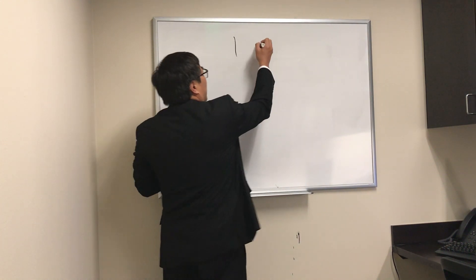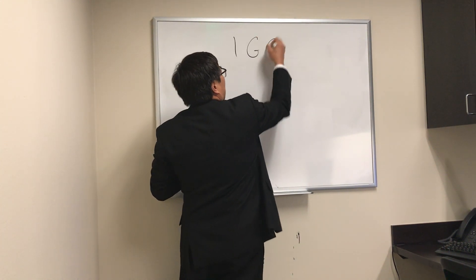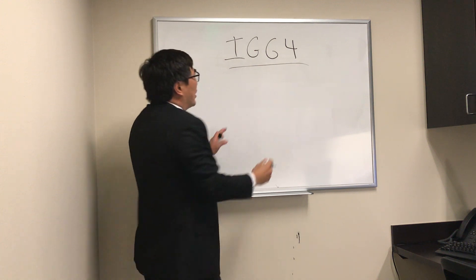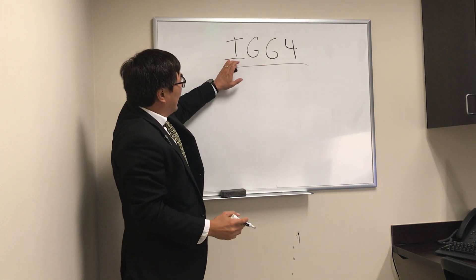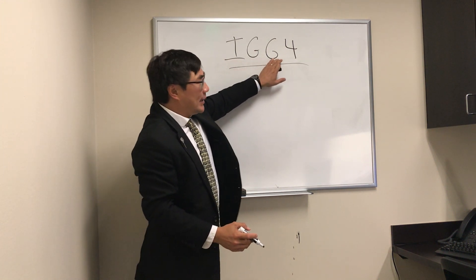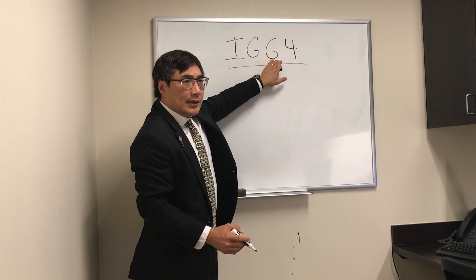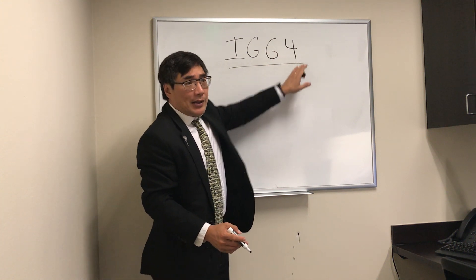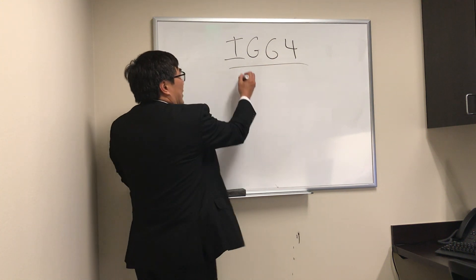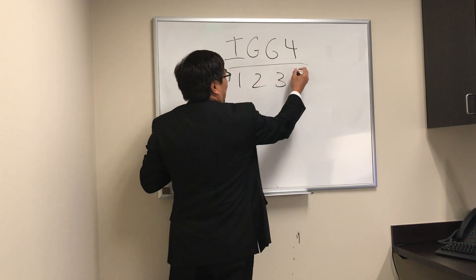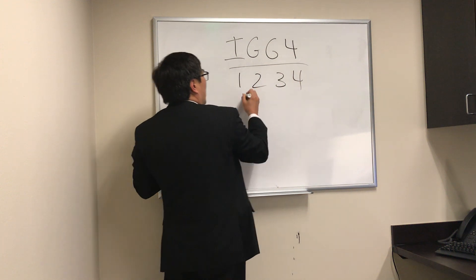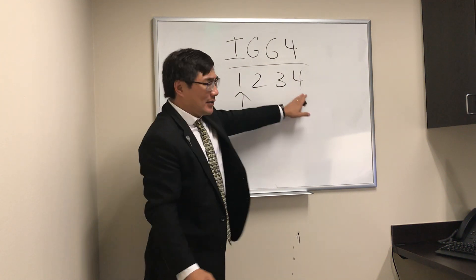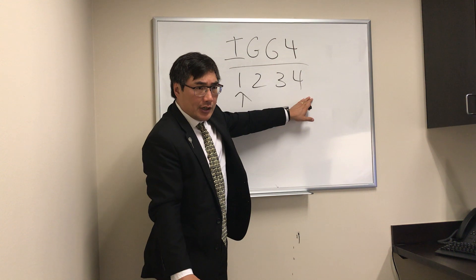Today we're going to be talking about IgG4. As you know, immunoglobulin IgG has four subclasses, and most of the normal IgG is actually subclass one. Subclass four is actually a very small percentage of the total IgG immunoglobulin.